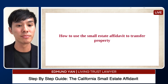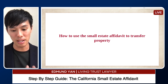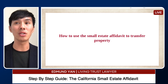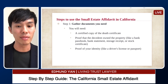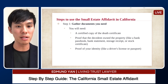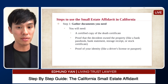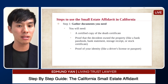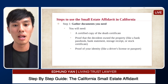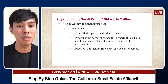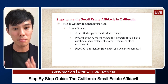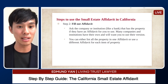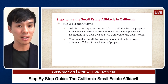If you do qualify, here's how to use the small estate affidavit to transfer property. Step one: gather the documents you need. You're going to need a certified copy of the death certificate — I recommend getting at least 10 certified copies because you never know how many you'll need. You also need proof that the decedent owned the property, like a bank statement, and proof of your own identity, like your driver's license.